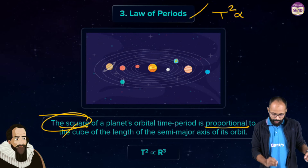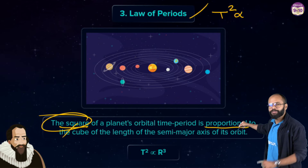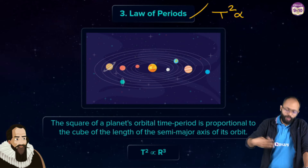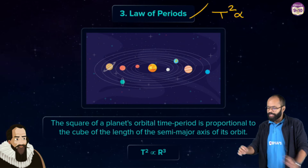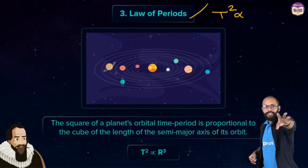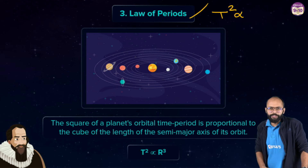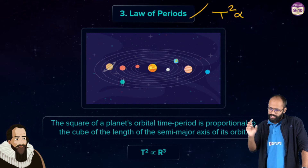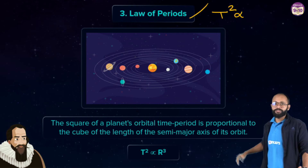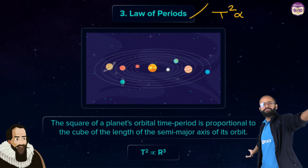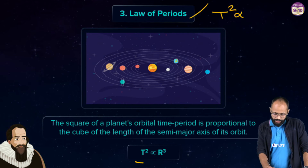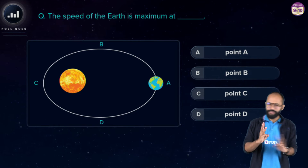Students often cram this law without understanding the semi-major axis — so make sure you understand it. Laws are derived by observing repeatedly, forming a hypothesis, and testing it across different planets. If it holds true every time, it becomes a law. So T² is proportional to r³. Now let's do some questions.